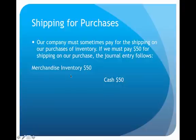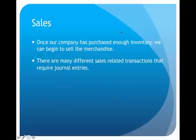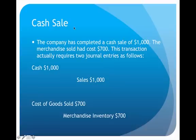So that pretty much takes care of purchases. I could have a cash purchase, a credit purchase, a purchase allowance, and also possibly shipping. Now once we've covered purchases, we want to take a look at sales, because ultimately that's why we are purchasing this merchandise — we want to turn around and sell it to our customers. Every time we have a sale that's going to have an effect on our company, and we'll record journal entries for each one of those transactions.